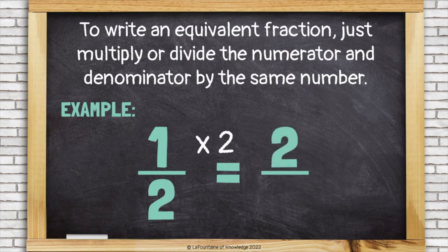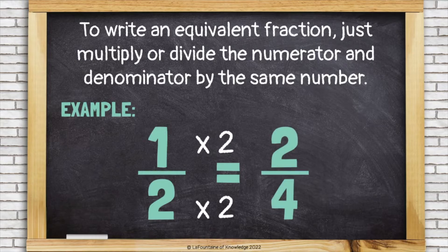One times two is two, and two times two is four. I could have multiplied by five and gotten five-tenths. I could have multiplied by a hundred and gotten one hundred two-hundredths. If I multiply the numerator and denominator by the same number, it will have an equivalent fraction.